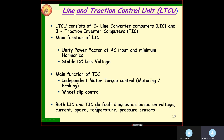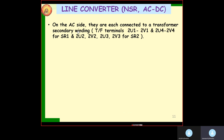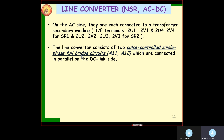Both LIC and TIC perform fault diagnostics based on voltage, current, speed, temperature, pressure, and sensor signals. On the AC side, they are each connected to a transformer secondary winding — for SR1: 2E1 and 2E4; for SR2: 2E2 and 2E3. The line converter is a two-pulse controlled single-phase full-bridge circuit, connected to terminals A11 and A12. It is self-commutating and is a four-quadrant converter.